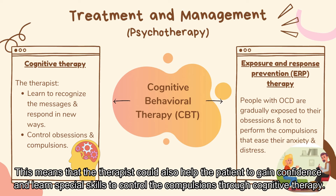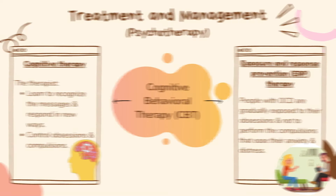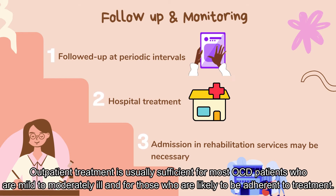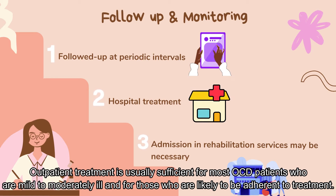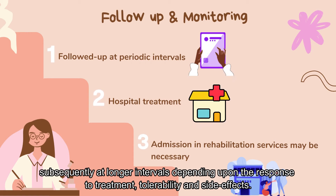This means that the therapist could also help the patient to gain confidence and learn special skills to control the compulsions through cognitive therapy. With the right and early treatment, the patients would often return to normal daily life and activities. Treatment for OCD is either on an outpatient or inpatient basis. Outpatient treatment is usually sufficient for most OCD patients who are mild to moderately ill and likely to be adherent to treatment. Patients may be followed up at periodic intervals, initially once a month or two, and subsequently at longer intervals depending upon the response to treatment, tolerability, and side effects.